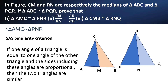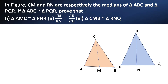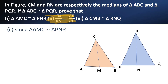The SAS similarity criterion states: if one angle of a triangle is equal to one angle of the other triangle, and the sides including these angles are proportional, then the two triangles are similar. Hence proved.